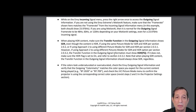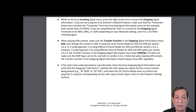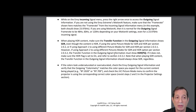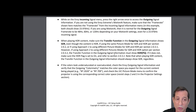While on the Envy incoming signal menu, press the right arrow once to access the outgoing signal information. If you're not using the Envy Extreme's motion AI feature, make sure that the frame rate here matches the frame rate of the incoming signal information. For example, for a movie, both should show 23.976. However, if you are using motion AI, then it is normal and expected for the outgoing signal frame rate to be 48, 60, or 120 hertz, depending on your motion AI settings, even for a 23.976 incoming signal.